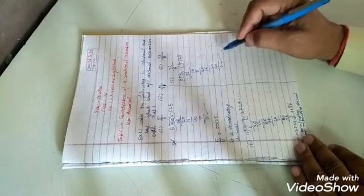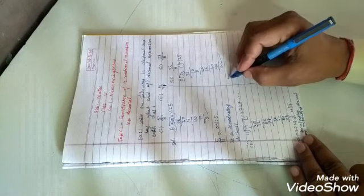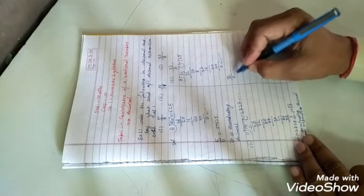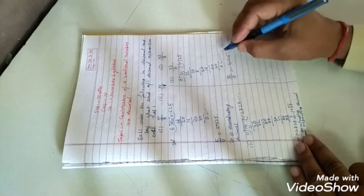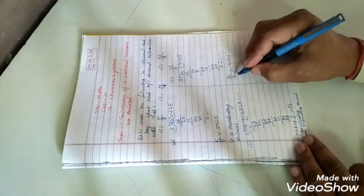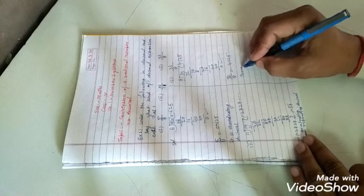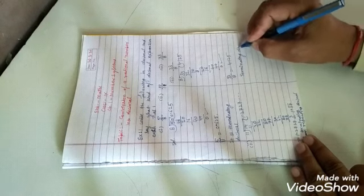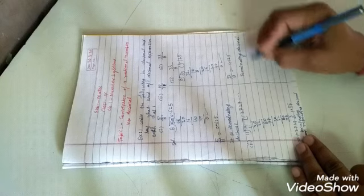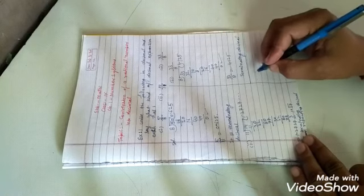The remainder is 0. So 33 upon 8 equals 4.125. When the remainder is 0, it means it is a terminating decimal.